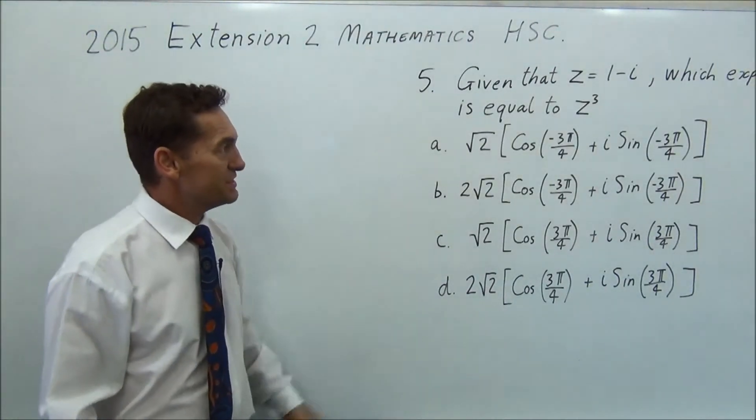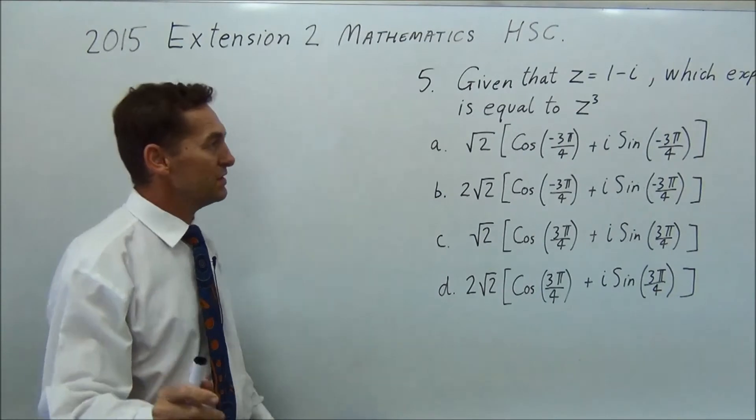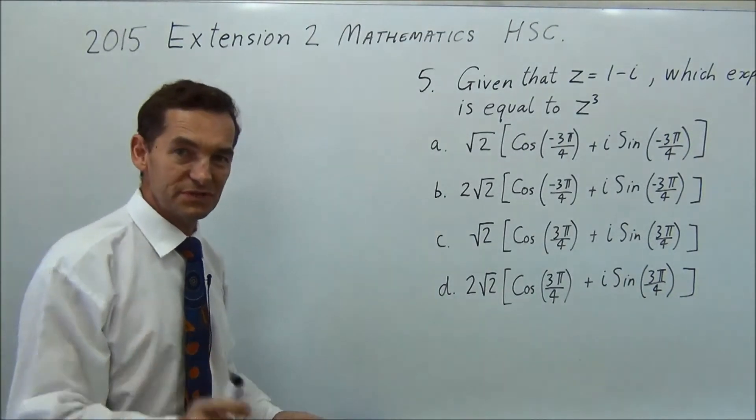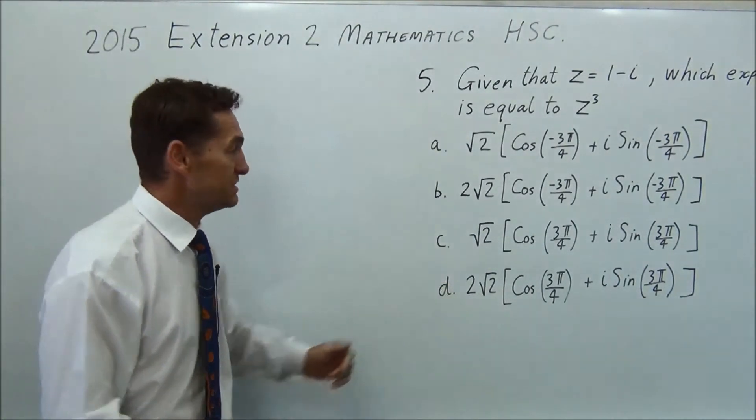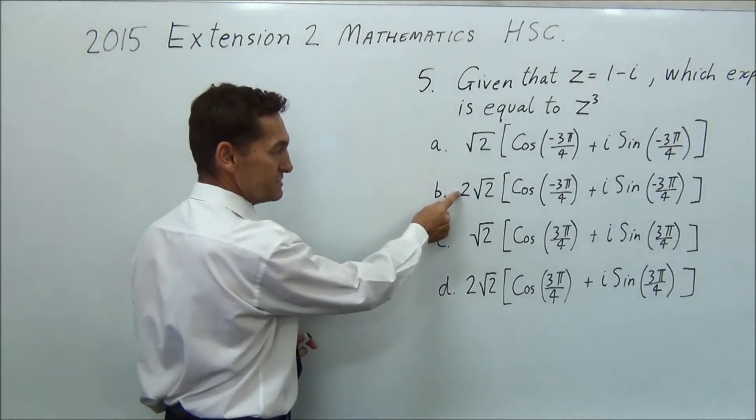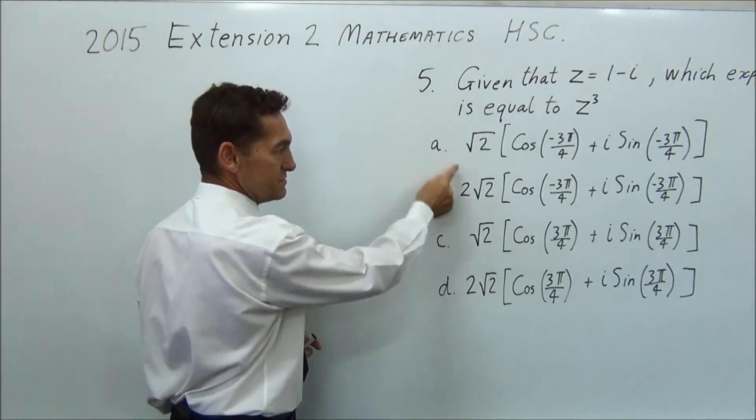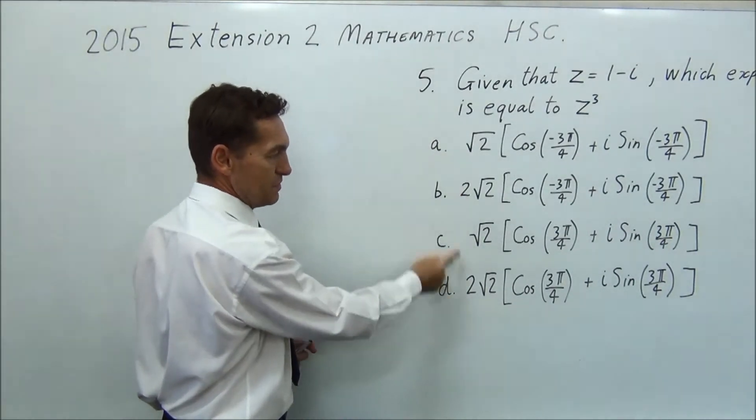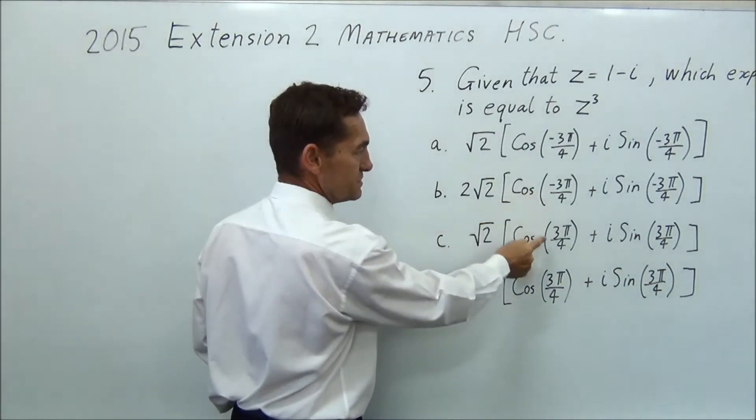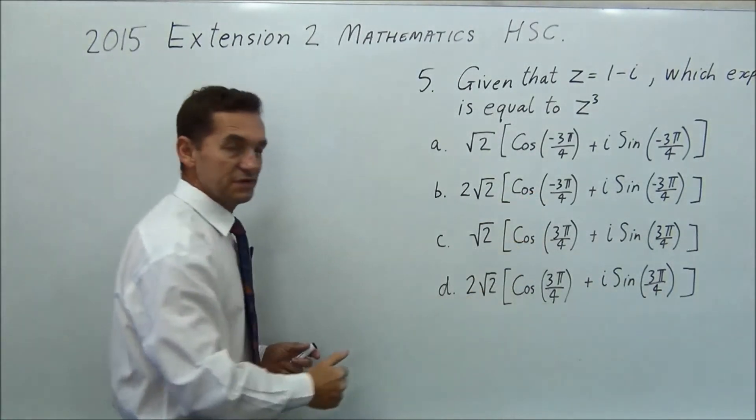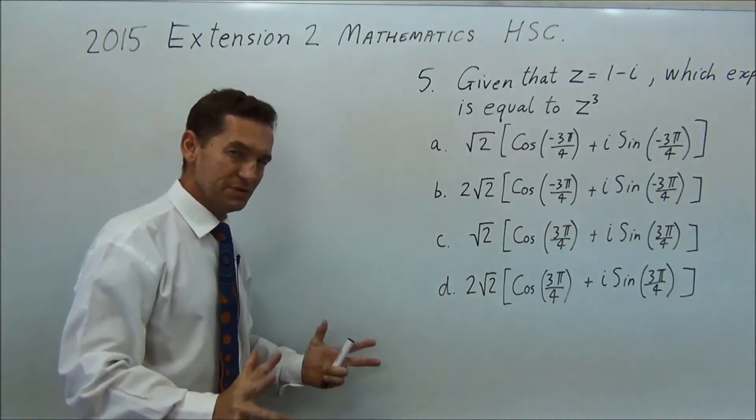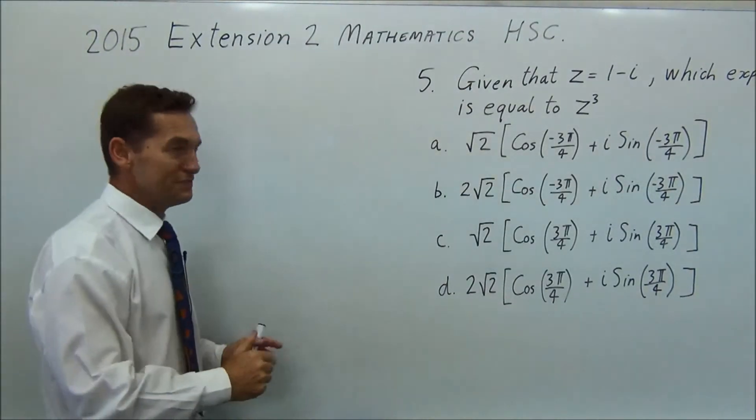Question five. Given that z equals one minus i, which expression is equal to z cubed? And they give you a bunch of answers. Notice the difference. These two are your only two choices repeated there for distance, and these two are your only two choices for your angle. So you really don't have too much to figure out.